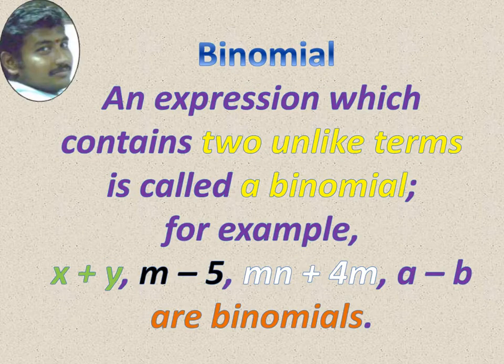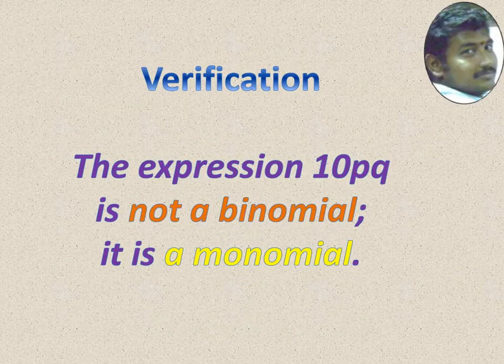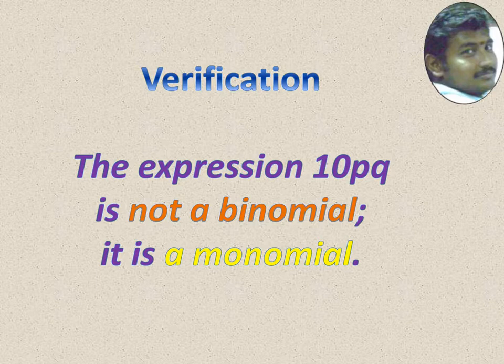Suppose two terms are there — an expression which contains two unlike terms is called a binomial. For example, x plus y, m minus 5, mn plus 4m, a minus b, and so on are binomials. There should be two unlike terms. For example, 10pq is not a binomial — it is a monomial because it has only one term.